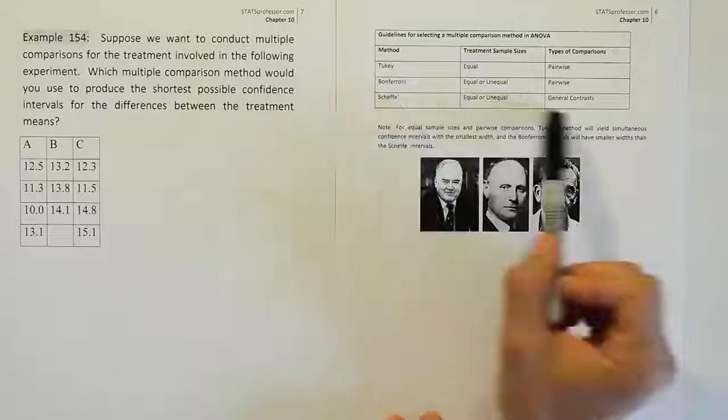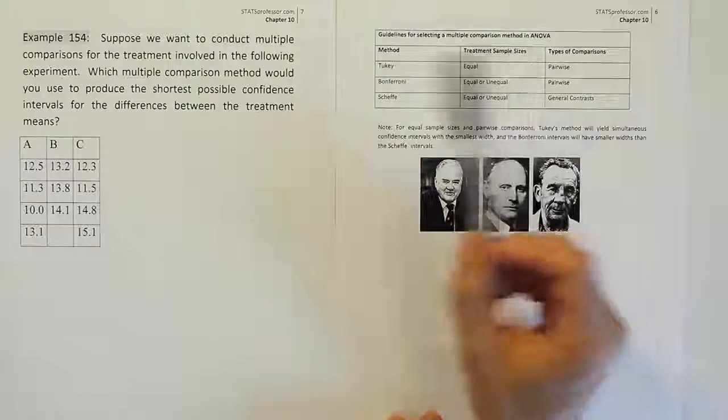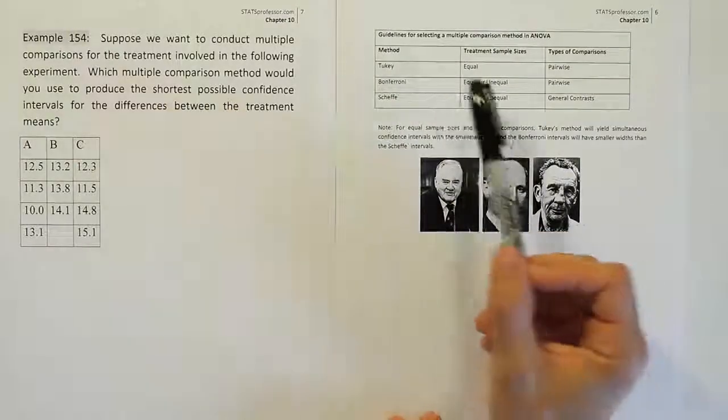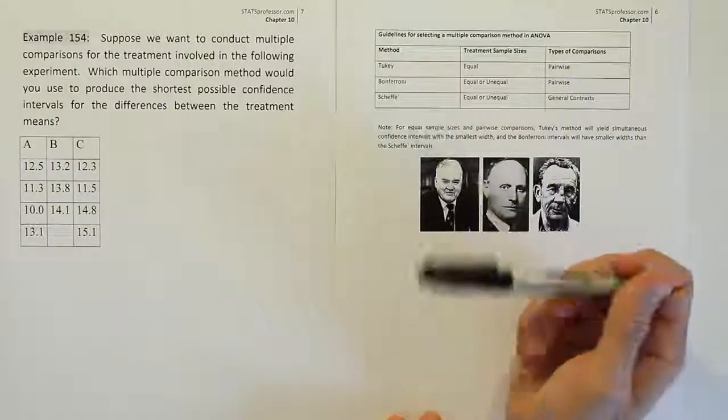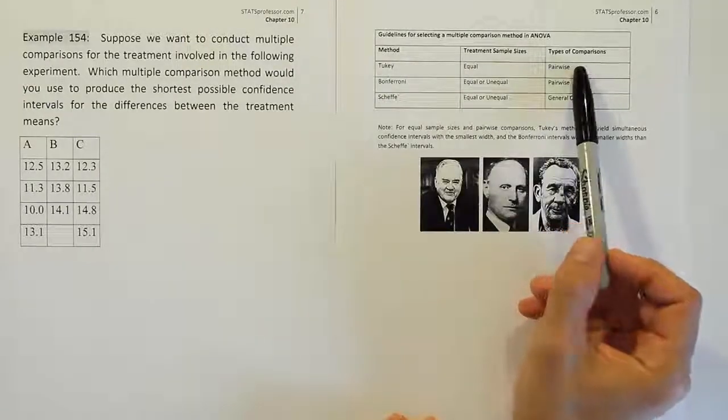So Scheffe is wider than Bonferroni, and Bonferroni is wider generally than Tukey. We want to have the shortest possible confidence intervals or the most narrow intervals, in other words, we want the intervals with the least margin of error that we can get. And Tukey would be the preferred choice if we could use it.